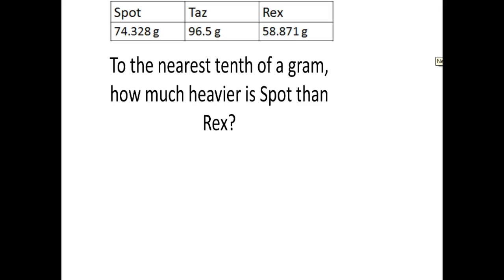Let's go to the next one. To the nearest tenth of a gram, how much heavier is Spot than Rex? Nearest tenth. Heavier's got the ER so I know we're subtracting. Spot and Rex, so I don't need Taz. So let's go to Spot because he's bigger. Find the tenth spot. Level 2 bully, stay where you're at, act like a cat. 74.3. Let's go to Rex, find the tenths. Level 7 bully, get off my floor, go up one more. He's going to 58.9.